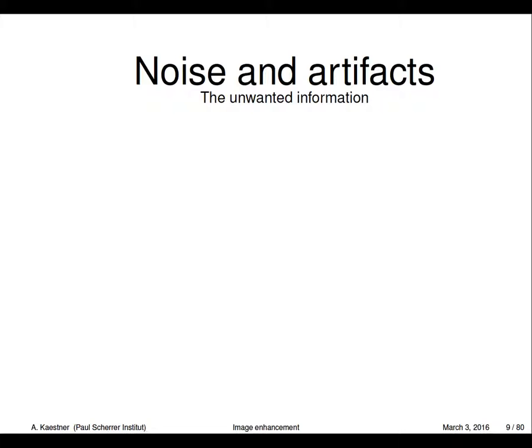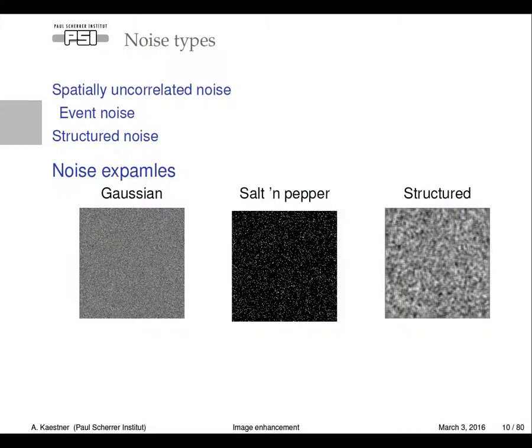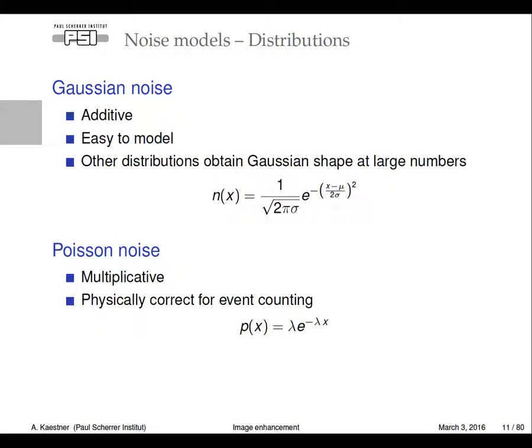So I promised noises and artifacts - the unwanted information. We have different kinds of noise. Spatially uncorrelated noise, like Gaussian noise. Then salt and pepper noise, also uncorrelated but with different characteristics. Then structured noise which is more smooth or textured. Looking at distribution-based noise, we have Gaussian noise which is additive, very easy to model, gentle to work with if you try estimations doing maximum likelihood.